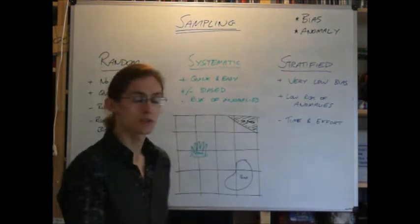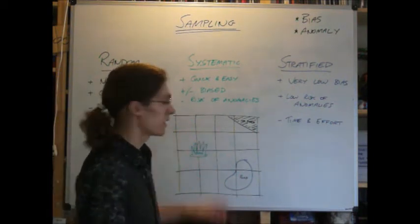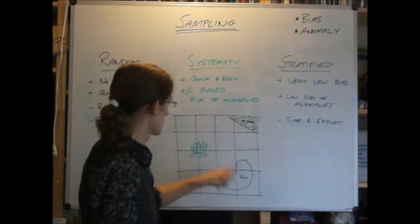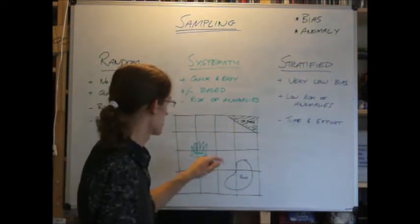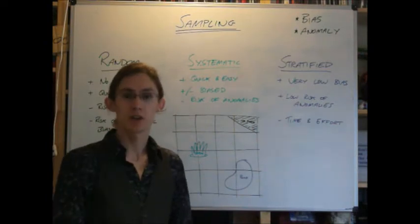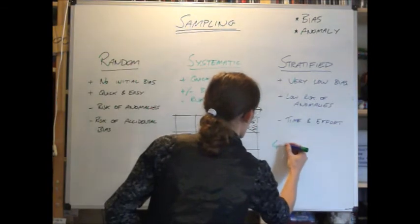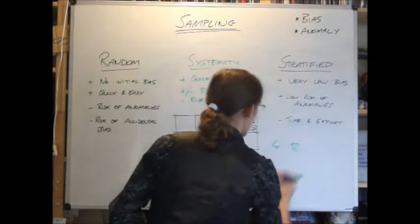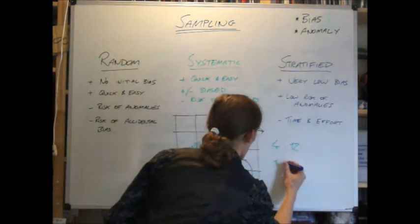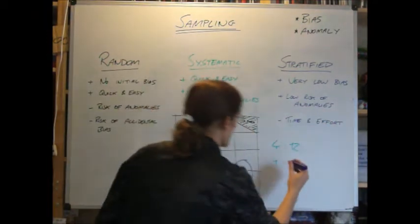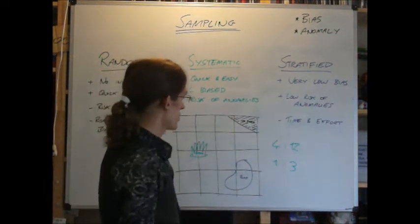We know that we need to have a ratio there. If there's 12 squares of ground, and four squares of stuff that we can't measure - the car park, the pond, and the bush - well, a ratio of four to twelve. There. We can reduce that down to one to three. We're dividing by four.